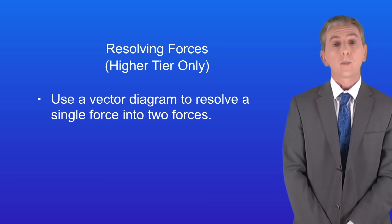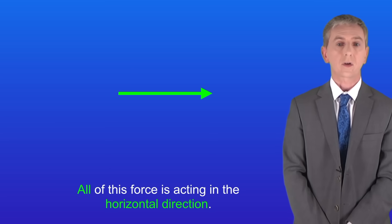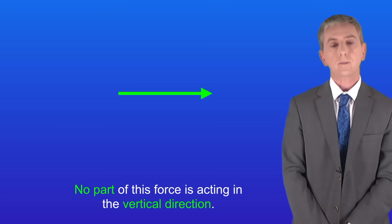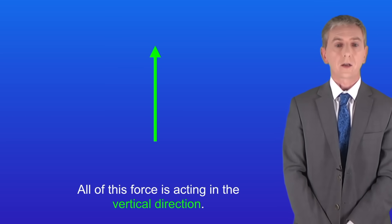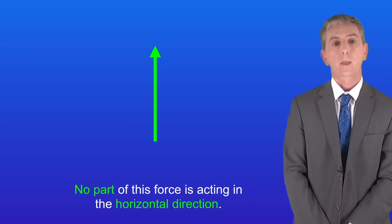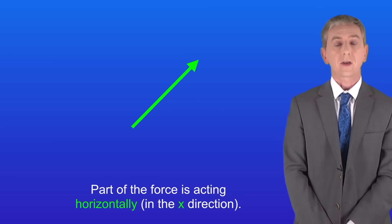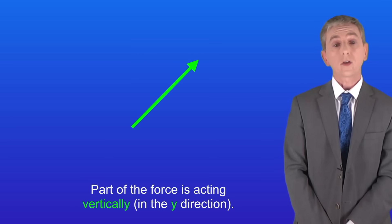Again this can look tricky, but it really isn't once you get the idea. I'm showing you here a horizontal force. As you can see all of this force is acting in the horizontal direction, no part of this force is acting in the vertical direction. This shows a vertical force - in this case all of this force is acting in the vertical direction, and no part of the force is acting in the horizontal direction. This force is acting diagonally, which means that part of the force is acting horizontally, in other words in the x direction, and part of the force is acting vertically, in other words in the y direction.